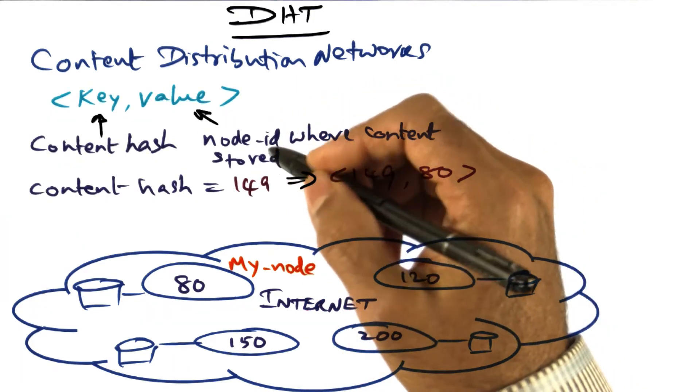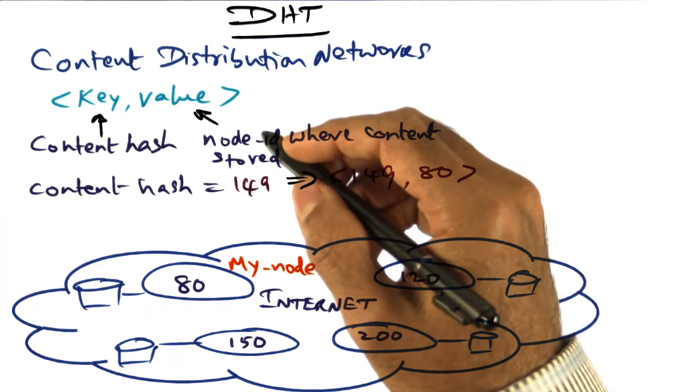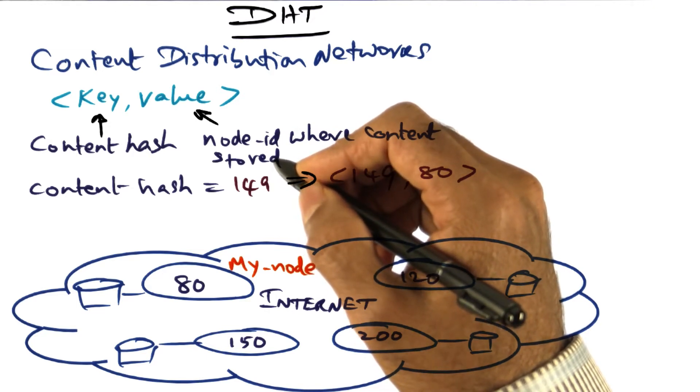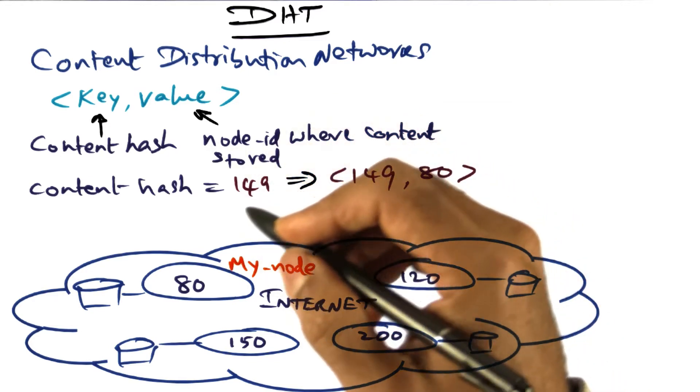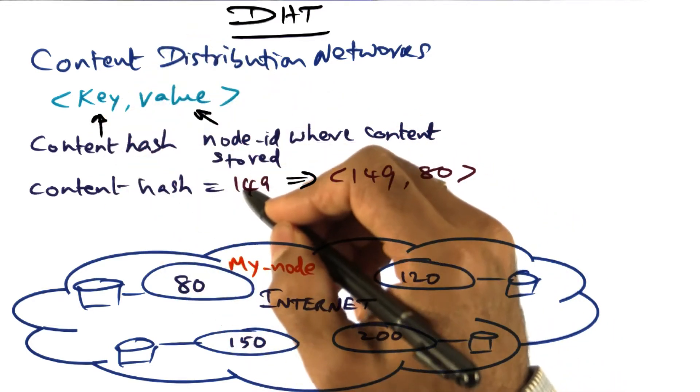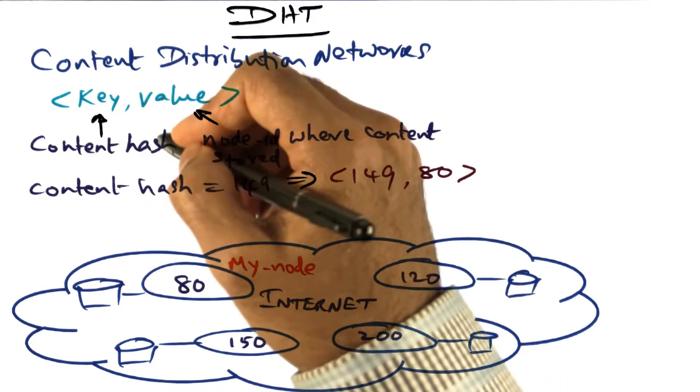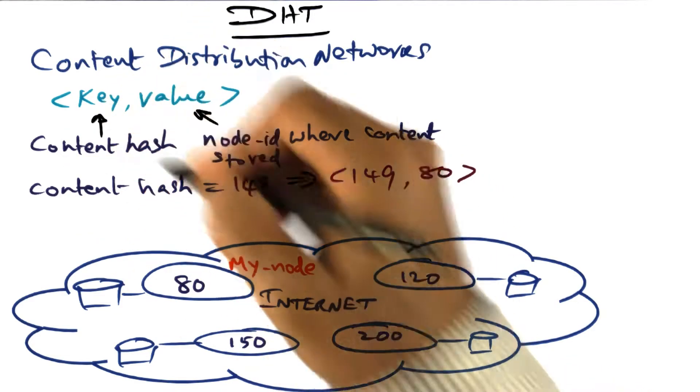Now how do I name the content of my video? Well, textual names may not be very meaningful because there could be name collisions. So what I'm going to do is create a content hash of the video. Let's say my content hash has enough bits to ensure uniqueness of the hash string that I generated. I'll call that the key.